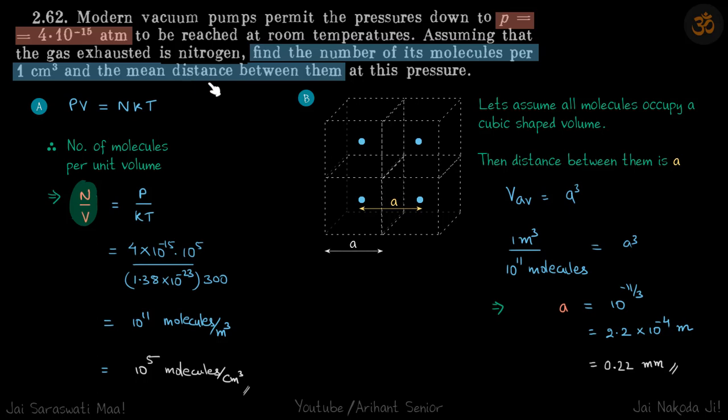Now for the mean distance between them. We can assume each gaseous molecule occupies equal volume. For simplicity, let's assume that volume is represented by this cube.